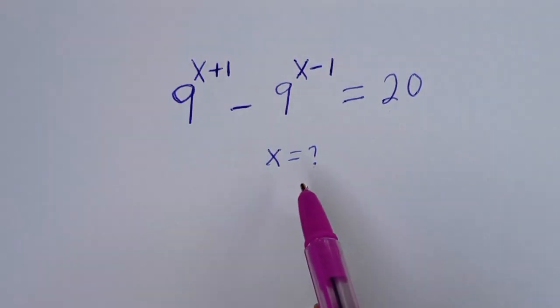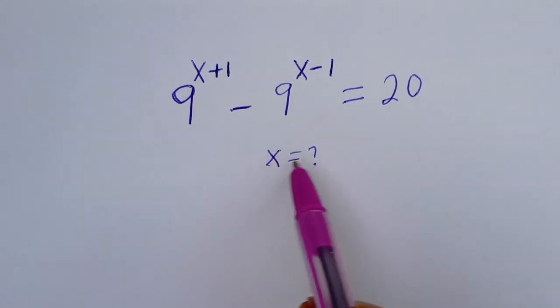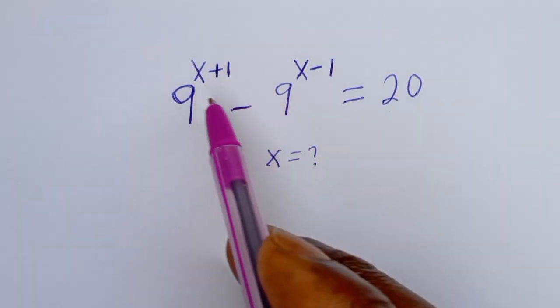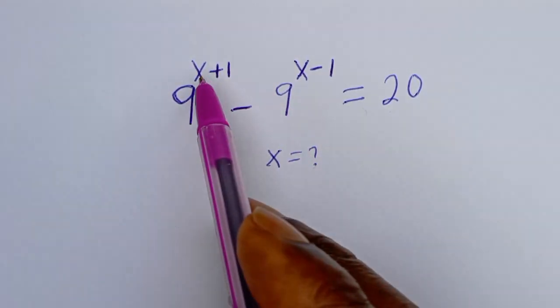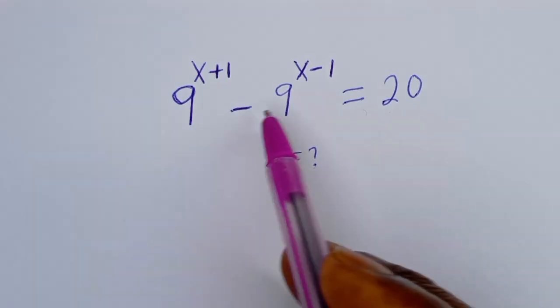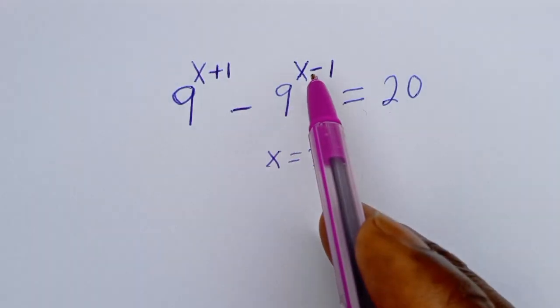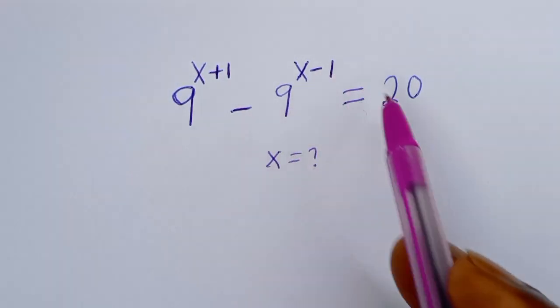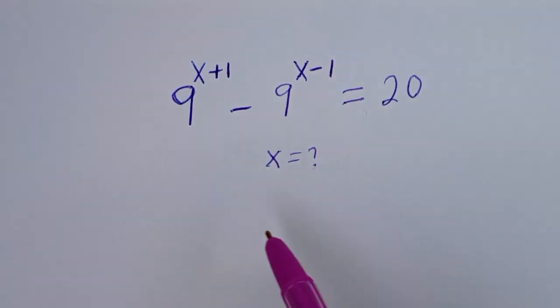Hello, you are welcome. How to solve for x in this equation: 9 to the power of x plus 1, minus 9 to the power of x minus 1, is equal to 20.